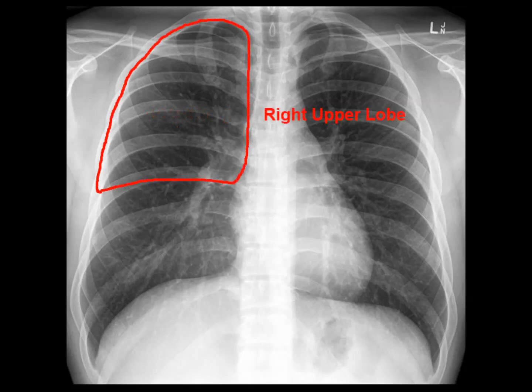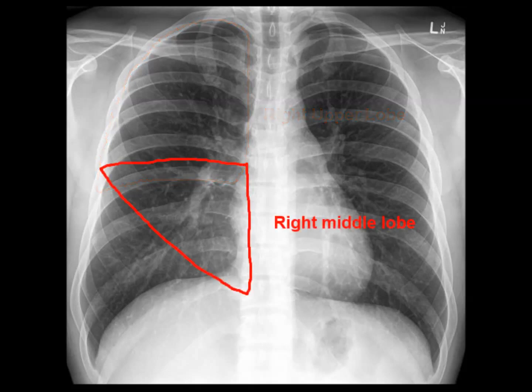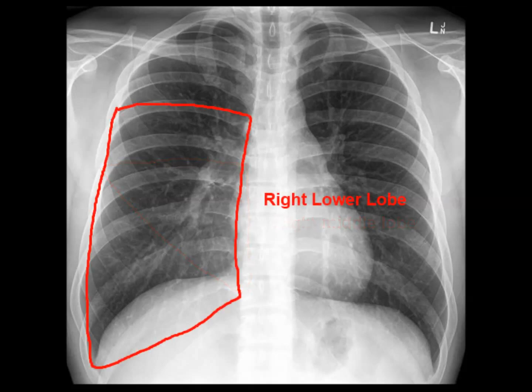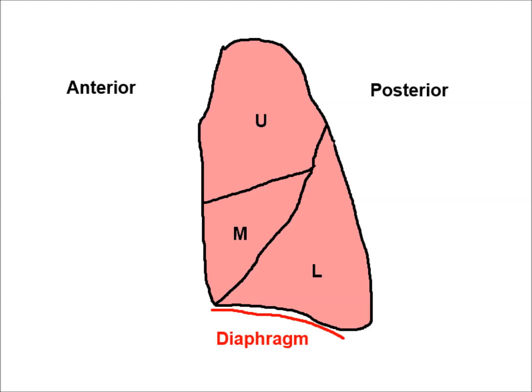Now onto the lung fields, starting with the lobes. On the right: the right upper lobe, then the right middle lobe — which touches the right heart border — and the right lower lobe, which touches the right hemidiaphragm. There is some overlap between lobes, particularly between the lower lobe and the other two, because of the three-dimensional structure of the lungs. The lower lobe occupies a space posterior to the other two lobes and also to the dome of the diaphragm — it doesn't touch the right heart border because the heart is anterior in the chest.